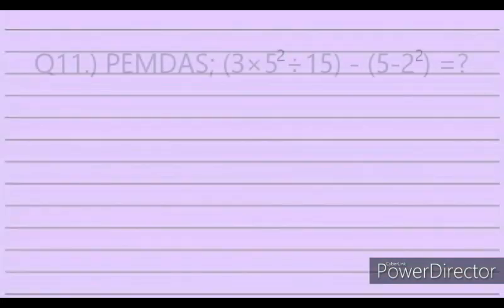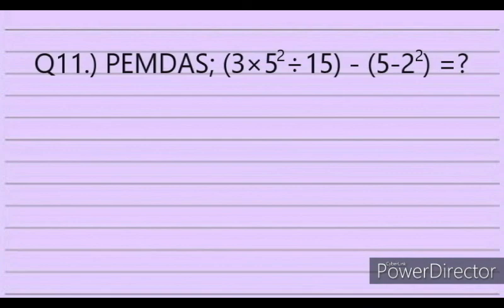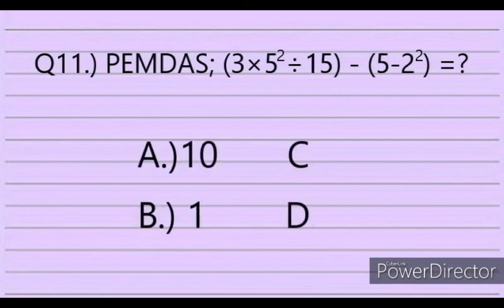Question 11. Use PEMDAS to evaluate: 3 times 5 squared divided by 15, minus (5 minus 2 squared). Answer choices: A. 10, B. 1, C. 6, D. 4.